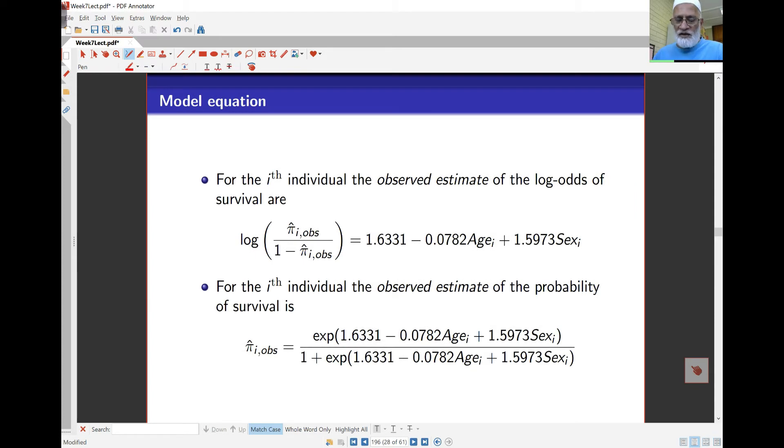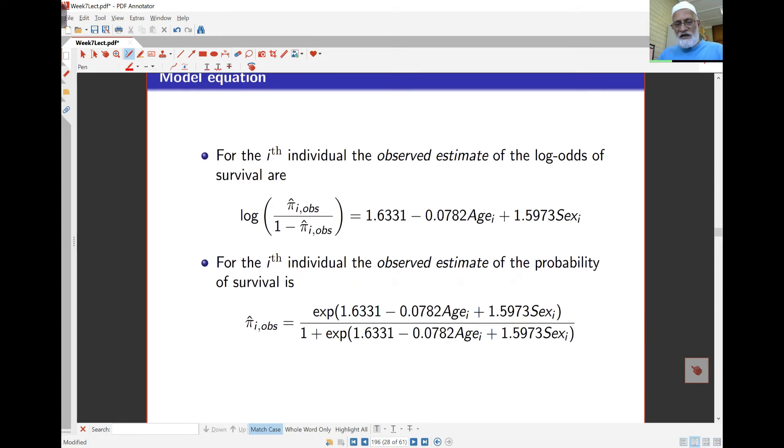For the i-th individual, the log odds of survival is 1.6331 minus 0.0782 times the age of the person, plus 1.5973 times the sex of the person. I can work out the probability of survival for the i-th person by just reversing the equation.